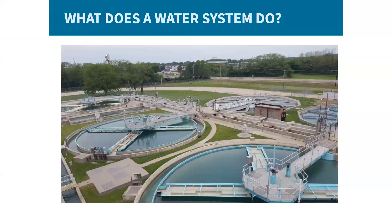Drinking water systems manage safe drinking water from its source to our taps. The primary responsibilities of a drinking water system are to maintain an adequate supply of water, assess water sources and identify potential threats, treat your water to potable standards, communicate essential information about drinking water safety to customers, and maintain the infrastructure needed to deliver potable water to your home.